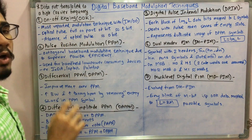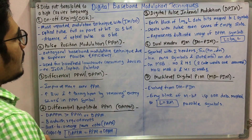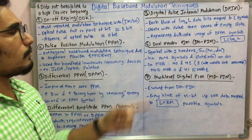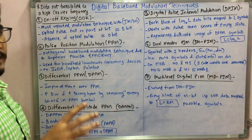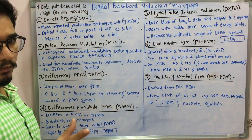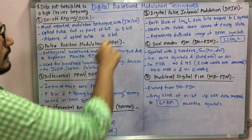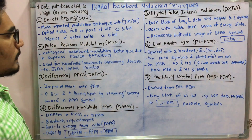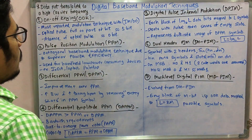We start with the very first technique: On-Off Keying (OOK). This is the most reported modulation technique, used alongside IM/DD — Intensity Modulation and Direct Detection. Here, signaling means an optical pulse representing a full or part of a bit of data. If that pulse is present, it represents a one bit; if there is an absence of an optical pulse or no signal, it means a zero bit.